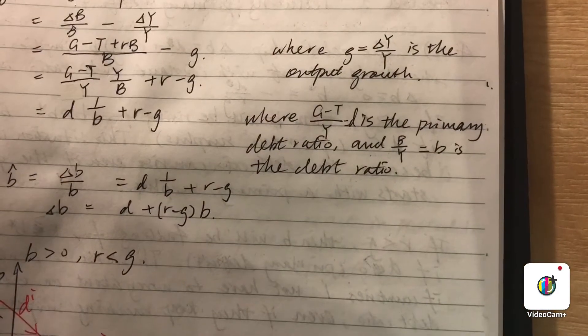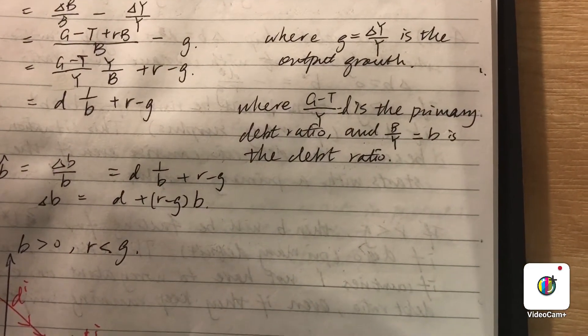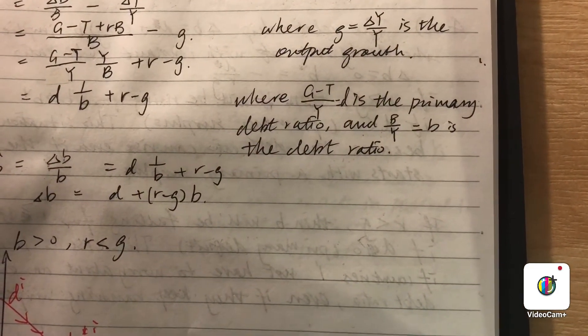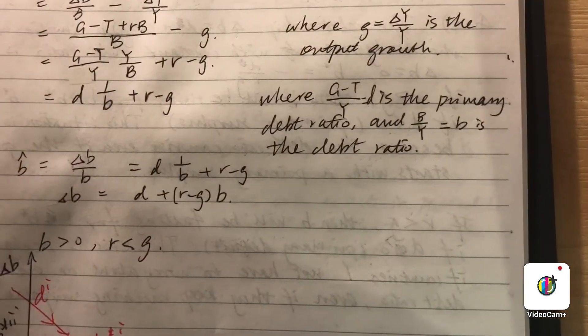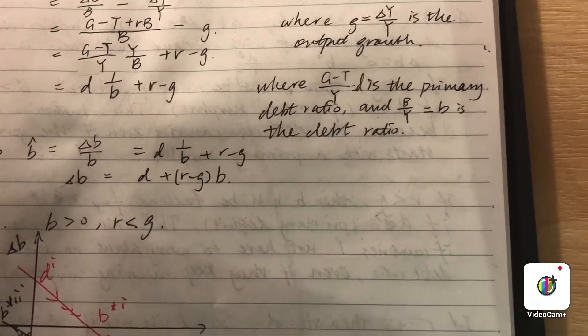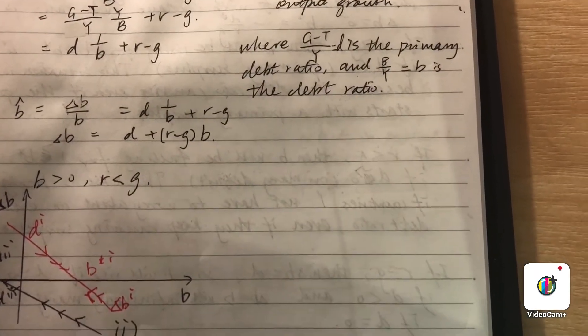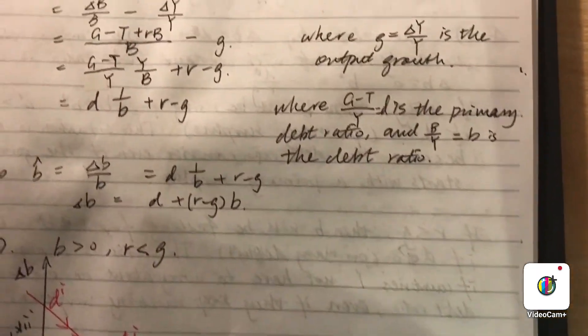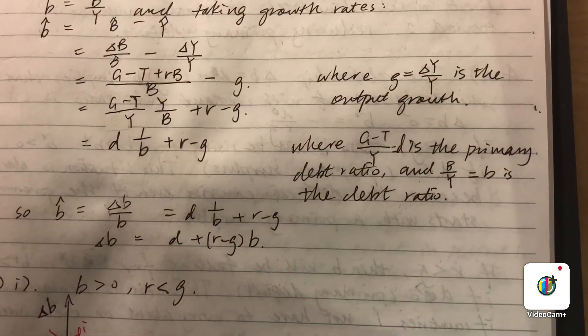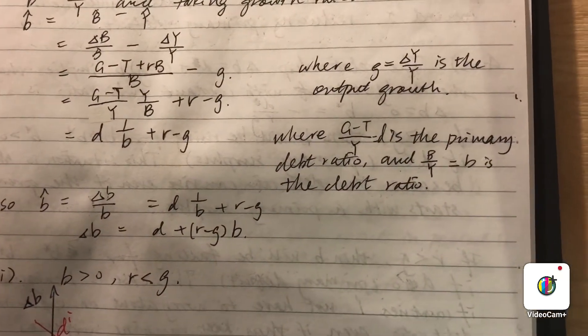And now we rearrange this to get this, and then recall that d is big D over Y. So sorry, I forgot to define D here.